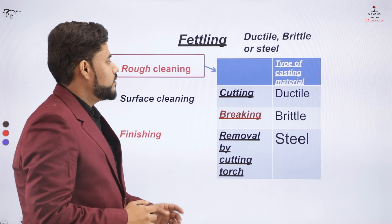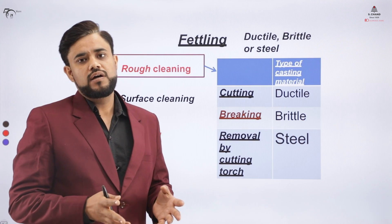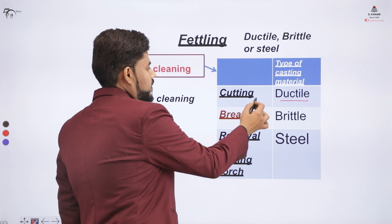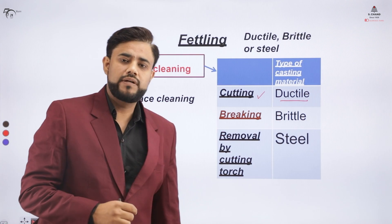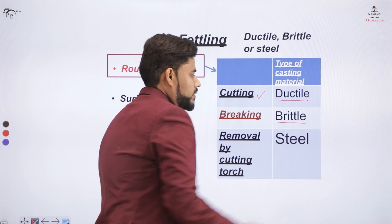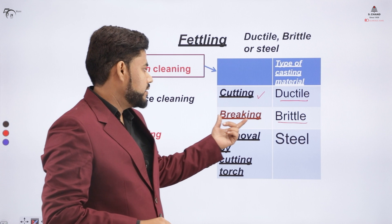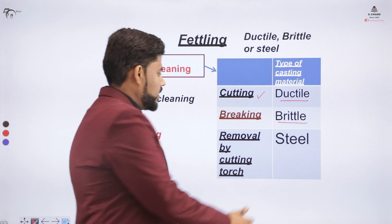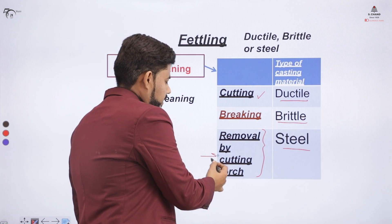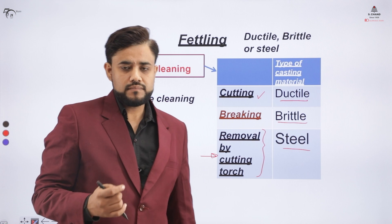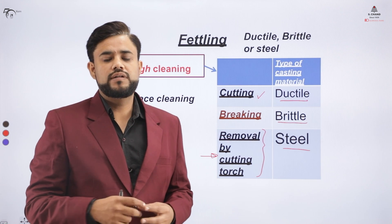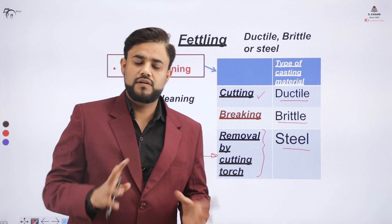In the rough cleaning process, we cut the extra metal from the surface of the casted item. If the material is ductile, we go for the cutting process — it can be cut with the help of a saw. If it is a brittle material, the extra material can be removed by breaking. But if the casted material is steel, we can cut it with the help of a cutting torch. The cutting torch uses an acetylene and oxygen flame combination to cut extra growths or projections on the surface of the cast.